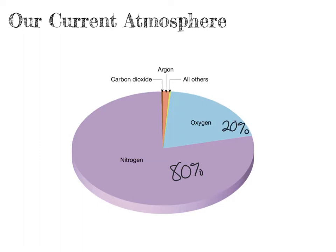Those are approximate figures — nitrogen is around 78%, oxygen is about 21%, but these round numbers are a little bit easier to remember and they are fine for your GCSE exams. The next largest component of our atmosphere is argon, which is a noble gas, and argon takes up approximately 1% of our atmosphere.